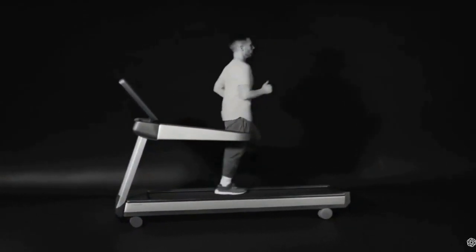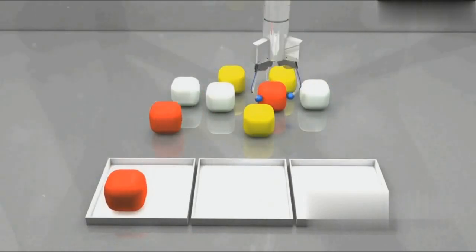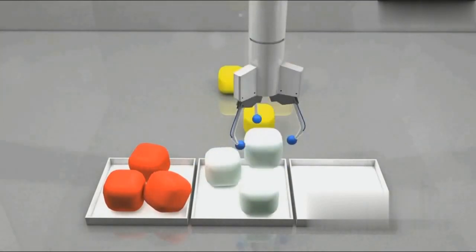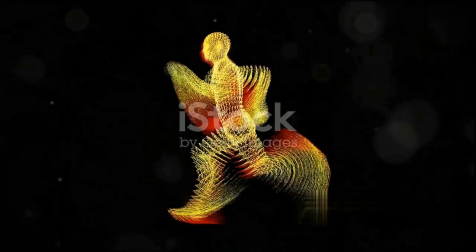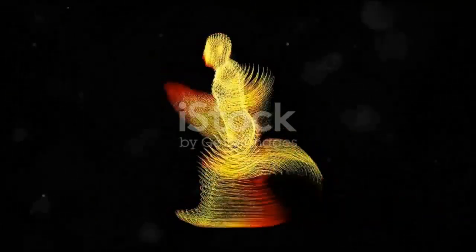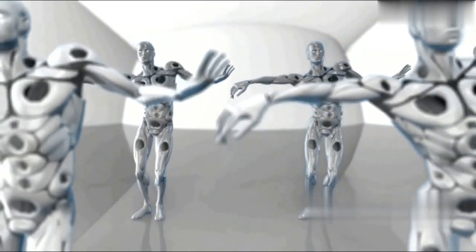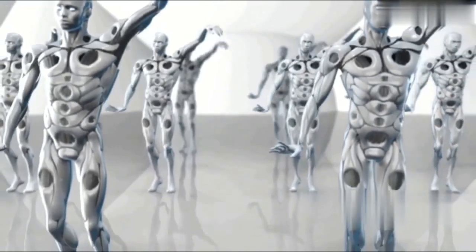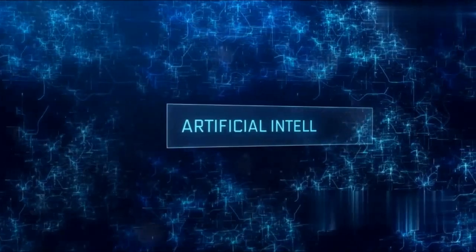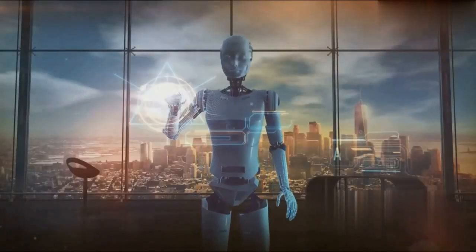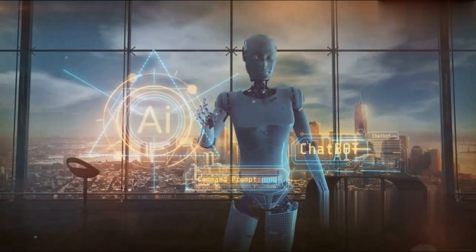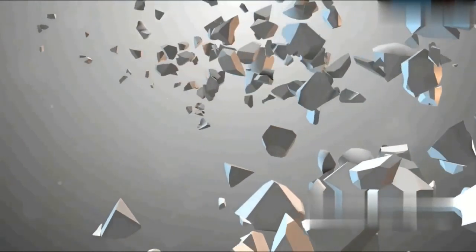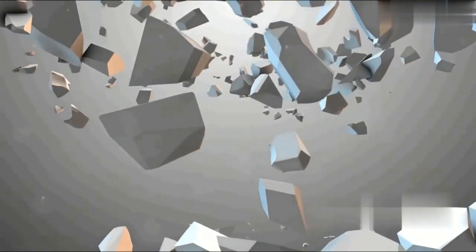Despite its remarkable abilities, Sora does have some weaknesses. While the model excels at creating visually stunning scenes, it can sometimes falter when it comes to simulating complex physics or understanding intricate cause-and-effect relationships. This means that although Sora can generate a visually believable video of a person running, it might struggle to accurately depict the nuances of their movement, especially when the action is physically complex or unconventional. Furthermore, Sora's comprehension of context can sometimes be limited. While it's adept at crafting elaborate visual narratives, it may not always grasp the deeper implications of certain actions or events. This could lead to some unusual or unrealistic scenarios, such as a character interacting with an object in a way that defies the laws of physics.